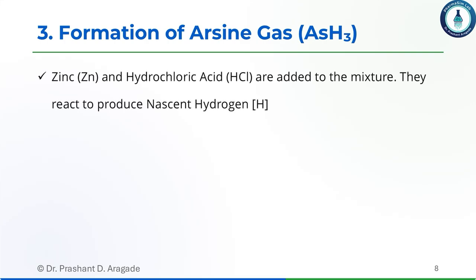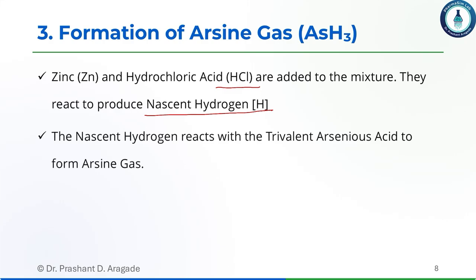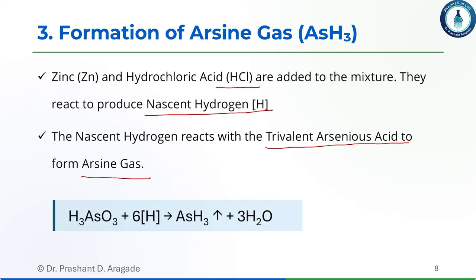Step three is the formation of arsine gas. We add zinc and hydrochloric acid, which generates nascent hydrogen. This nascent hydrogen reacts with trivalent arsenious acid to form arsine gas. All arsenic impurity present in the sample is now converted to arsine gas.